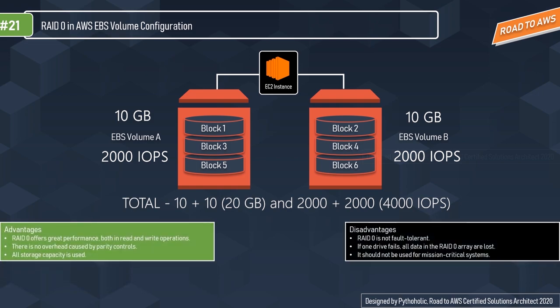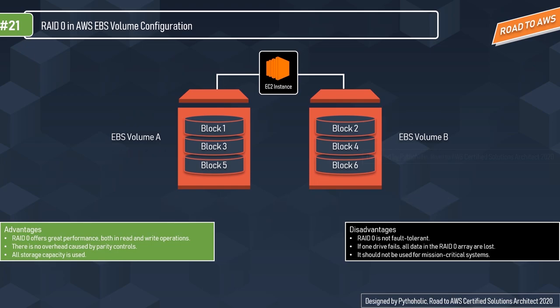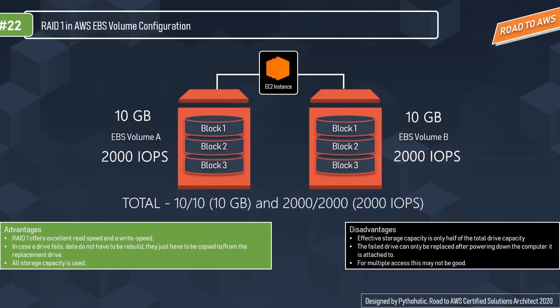For EBS RAID 1, you get a mirror image of the data across two volumes. However, because data is replicated, if you have 10 GB per volume at 2000 IOPS, even when combining both volumes in RAID 1 you still get 10 GB and 2000 IOPS — because logically you only use one volume to read or write data.